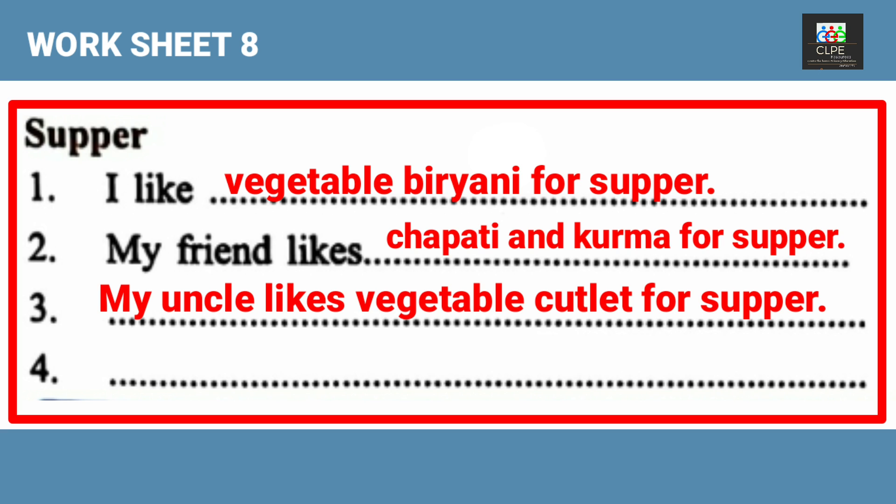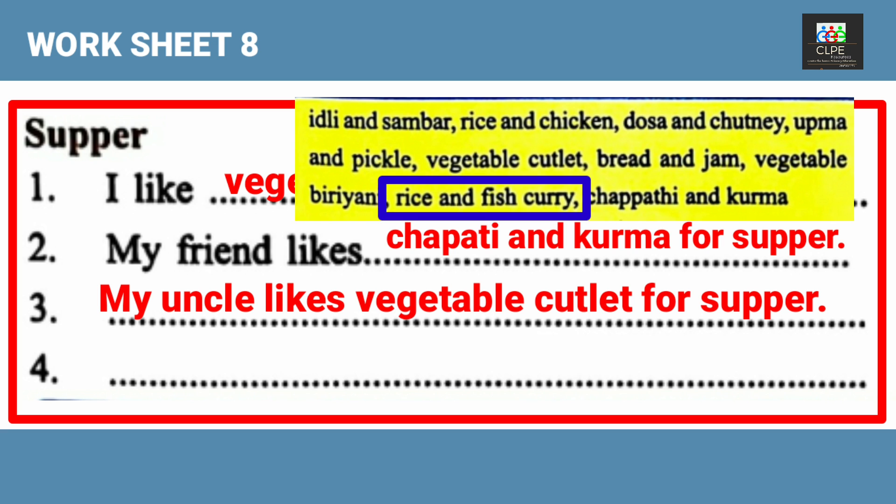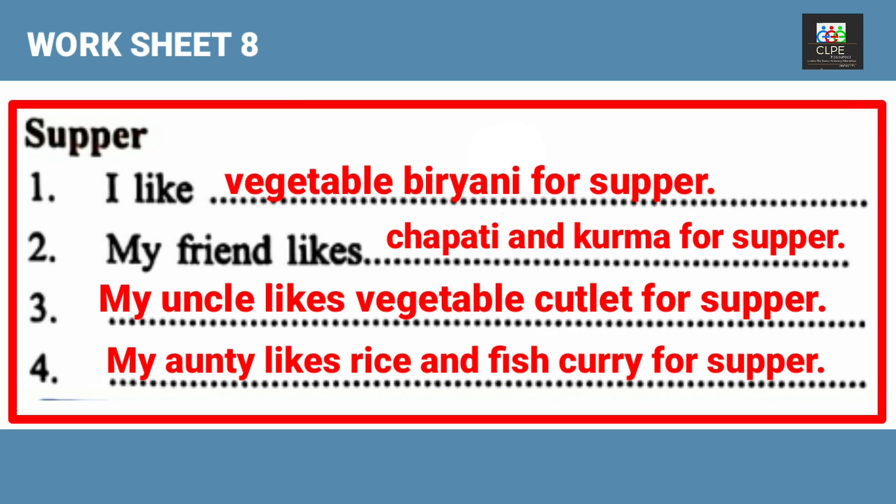For auntie, we can select rice and fish curry: 'My auntie likes rice and fish curry for supper.' While writing, you can choose different names and food items — you don't have to use the same words repeatedly.